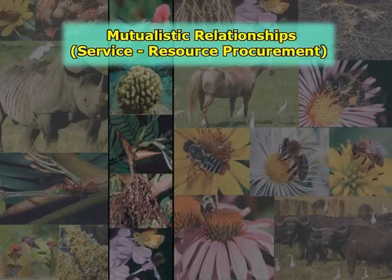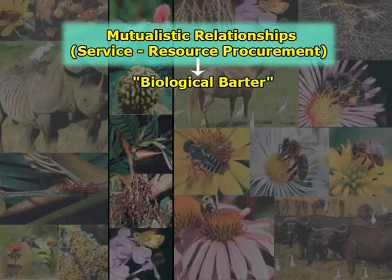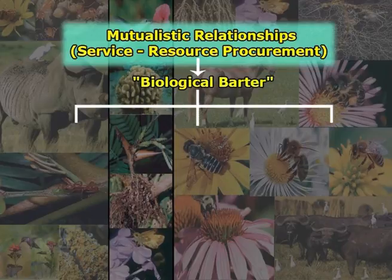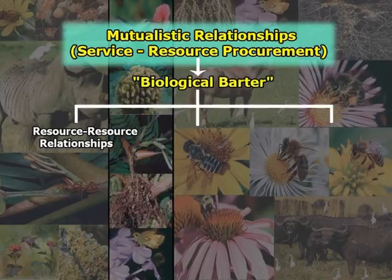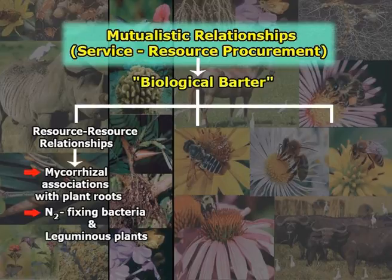Mutualism can also be thought of as a form of biological barter, since species trade resources like nutrients or services such as gamete or pollen dispersal or protection from predators. Depending on this, mutualistic relationships can be of three types. The first is resource-resource relationships, in which one type of resource is traded for a different resource. The most common forms include mycorrhizal associations between plant roots and fungi, as well as nitrogen-fixing bacteria and leguminous plants.